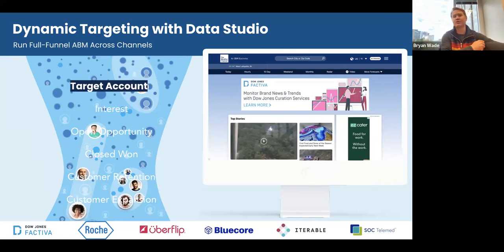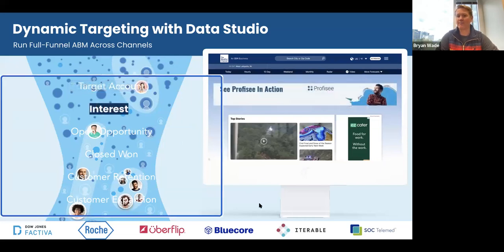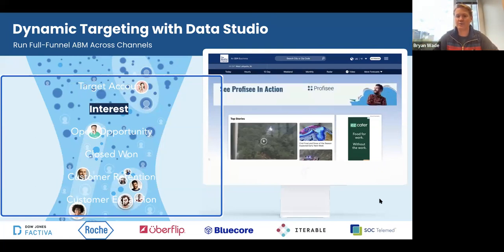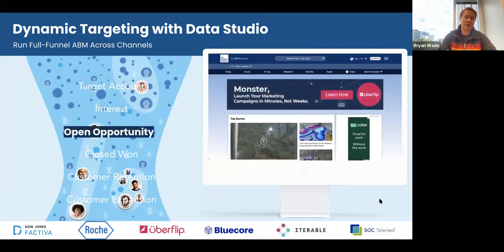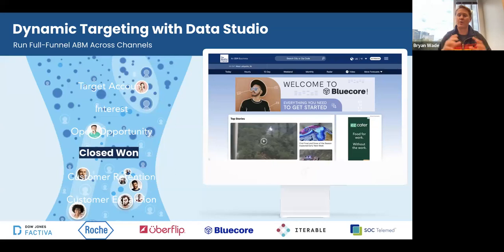Let me talk about some examples of how clients are using Data Studio to target their clients with ads, email signature banners, personalized chat conversations, and personalized web experiences. The first example is Dow Jones. Dow Jones is using Terminus to target top-of-funnel accounts that are signaling intent — you can see the ads they run to their target account lists. Clients like Prophecy are targeting visitors who are showing interest in specific products to get a demo.